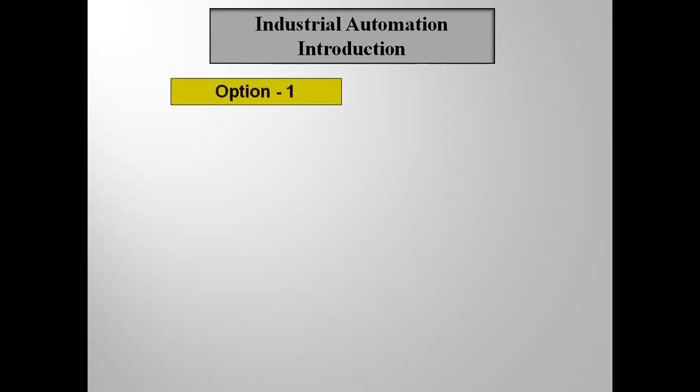There are many methods or options to control any process. The first option, when there was no automation, is manual control. Manual control means the operator will be controlling the process. One operator cannot handle a big plant or big machine. For example, if I have to fill 100 bottles in 30 minutes and fill the exact level in all the bottles, is it possible manually by one person in 30 minutes? Not possible.